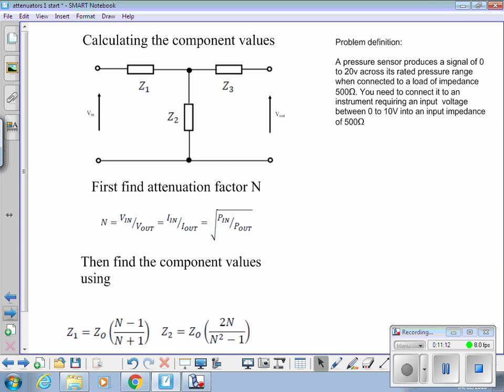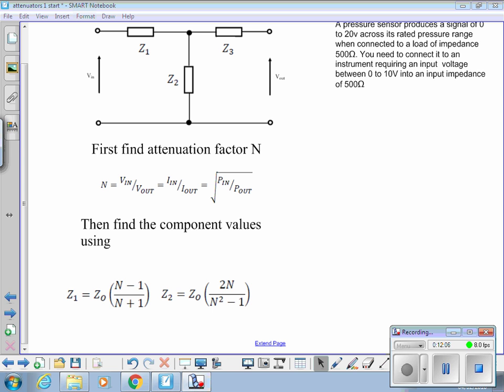Calculating those component values. First of all, we're going to look at how we do these calculations by hand, and then we'll have a look and see what the online calculator says. We're going to sort of do a little bit of what you're going to do for the actual practical but not all of it. We're going to have a look at the hand calculations first. First thing we need to do is find what's called the attenuation factor N. We can get that in three ways depending on what we've been given. We can either get it from V_in over V_out, I_in over I_out, or the root of P_in over P_out. You've been given V_in and V_out, so you're going to get it from that. I'll just pause the video, calculate. Then once you know N, you can find the values of...